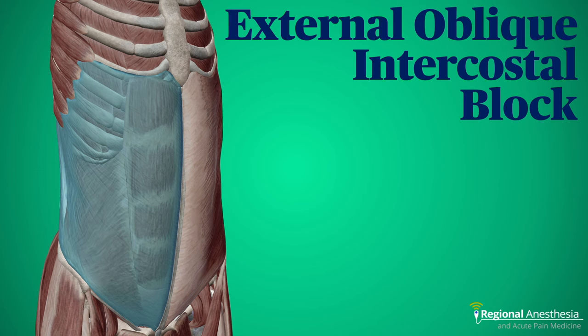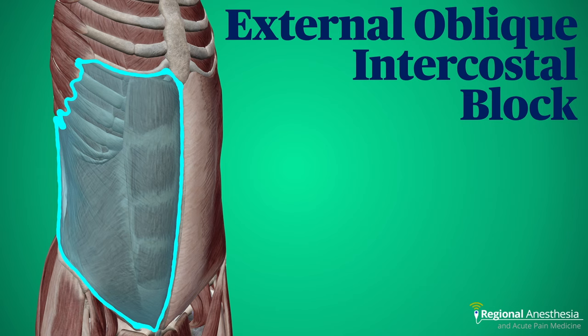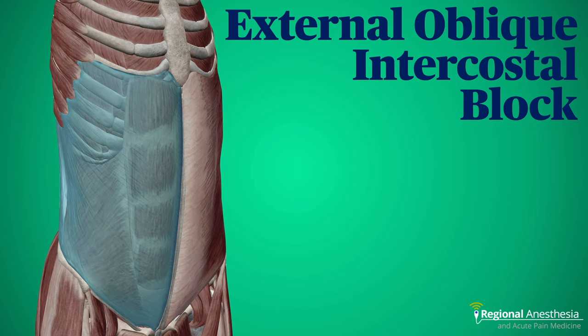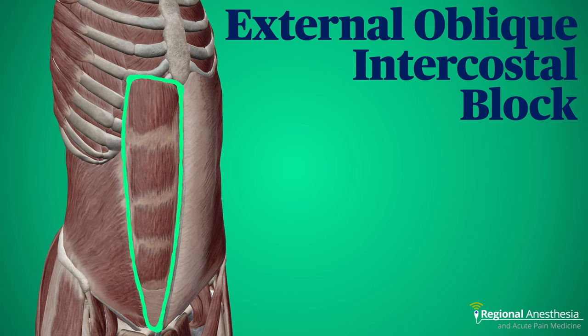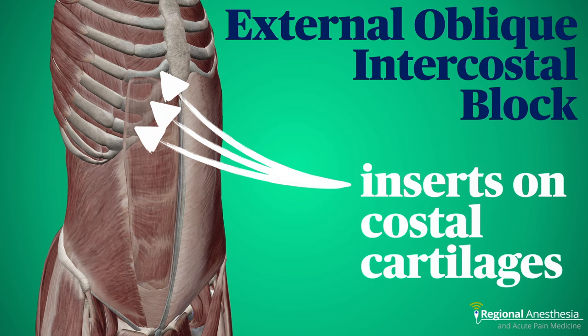Let's look at the anatomy. We tend to think of the external oblique as being an abdominal muscle, and it is, but there's a good chunk of it that lies over the thoracic cage. It arises from the lower six ribs, running down and medial to insert on the linea semilunares. If we peel that away, we find the rectus abdominis medially and the internal oblique laterally. The rectus also attaches to the rib cage, inserting on the costal cartilages of ribs five, six, and seven.